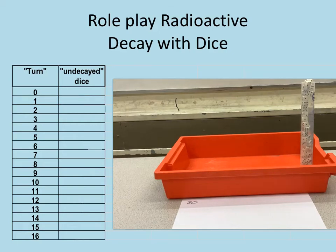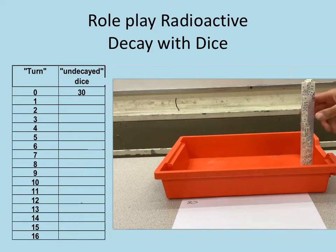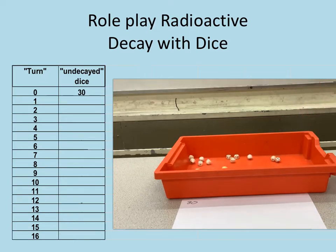In this video I'm going to use dice to represent my radioactive nuclei and I'm going to roll my dice, and if they roll a six then I'm going to say my nucleus has decayed. If it doesn't roll a six I'm going to say it hasn't decayed. So I've got my 30 dice, let's tip them out.